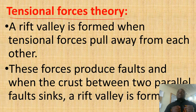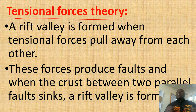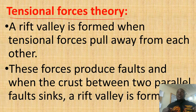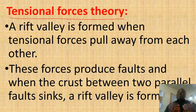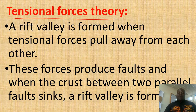Definitely, when these forces pull away on both sides of the crustal block, the crustal block will be subjected to stress. And what happens? It will crack. And when it cracks, the lines of weakness are formed. This makes the crustal block between the two lines of weakness become loose and unstable, and it sinks. And finally, a rift valley is formed.